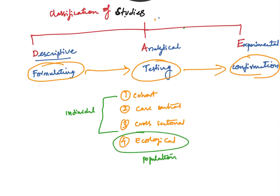The different types of experimental studies include RCT — randomized controlled trials, also called clinical trials — as well as field trials and community trials. All of these come under experimental studies.